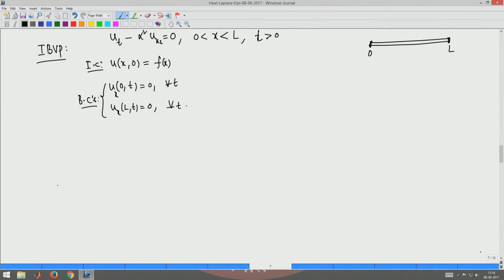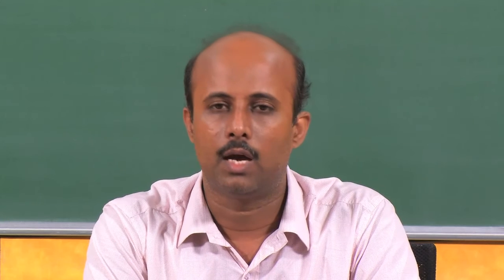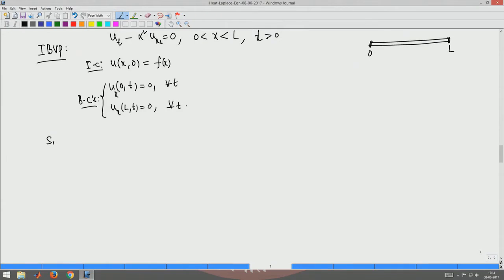This problem is straightforward because the boundary conditions are homogeneous — that is, U_x or U plus U_x equals 0 on the right-hand side. If the right-hand side were some nonzero constant or other function, we would have to use the technique explained in the last video. Since the conditions are homogeneous, we can work out the method in a straightforward way.